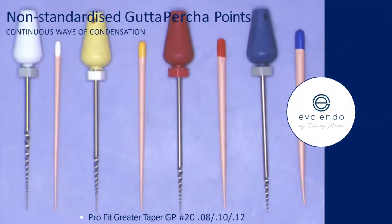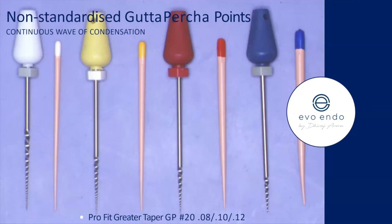With warm vertical or continuous wave condensation, you can use non-standardized GP points — most rotary systems come with matching GP points, just use them. Manufacturers are allowed to produce GP points with a 5% leniency in measurements, so if the first GP point doesn't fit accurately, try another. If two, three, or four aren't fitting, don't kid yourself — you may have blocked the canal with debris and may need to irrigate and re-dry. Endo is not about shortcuts; it's about eliminating errors in process.